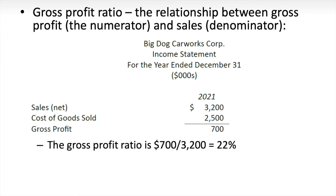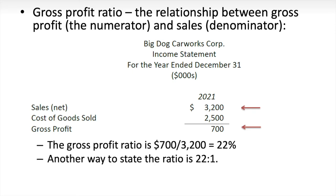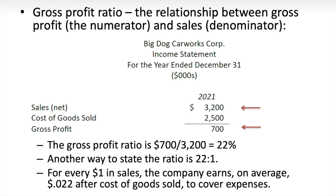The gross profit ratio is defined as gross profit divided by net sales — profits divided by revenues. In this case, gross profit was $700 and net sales were $3,200. $700 divided by $3,200 equals 22%. Profit ratios are often expressed as a percentage. Another way to state the ratio is 22 to 1, meaning for every $1 in sales, the company earns on average $0.022 after covering cost of goods sold.